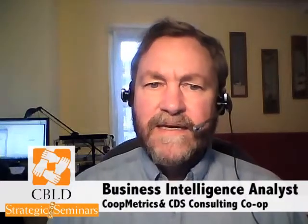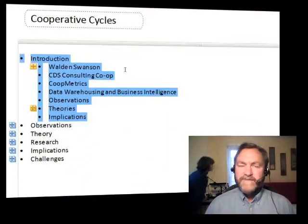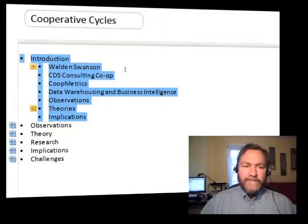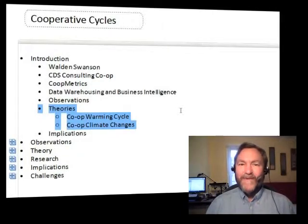Hi, my name is Walden Swanson and I work for CDS Consulting Co-op and also for CoopMetrics. I do data warehousing and business intelligence for several different cooperative sectors including natural food stores. I want to go over today some observations from that data, some theories derived from those observations, and then the implications we have for co-op development and just how our co-ops perform. One bit on the theories is that I feel like there's a co-op warming cycle that we're in now, and that co-op climate change is really in good shape right now.